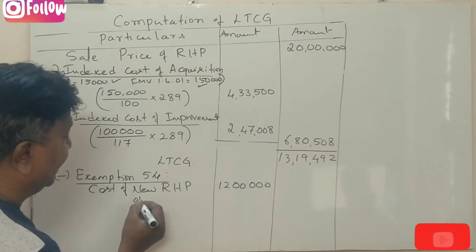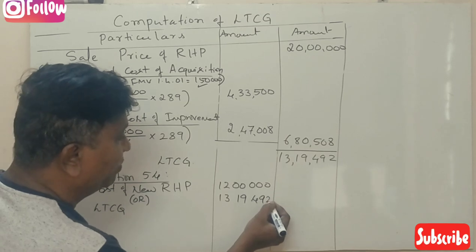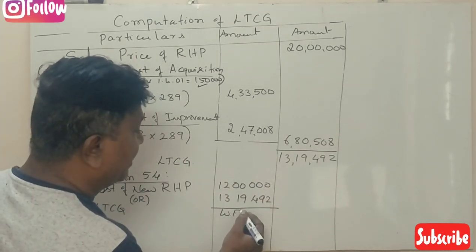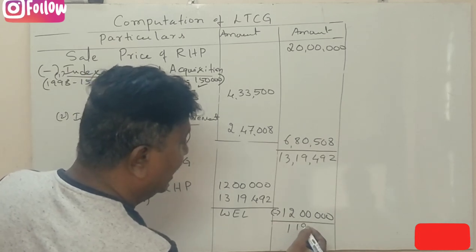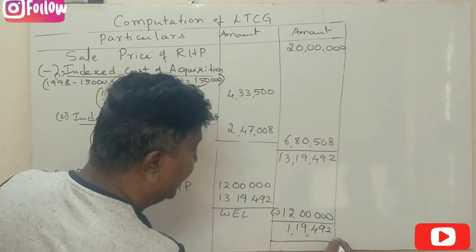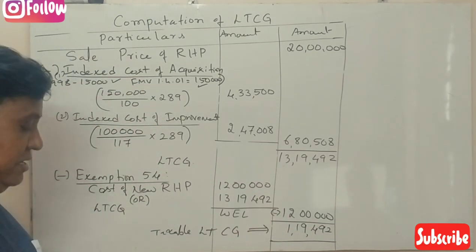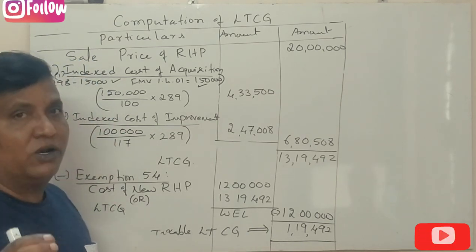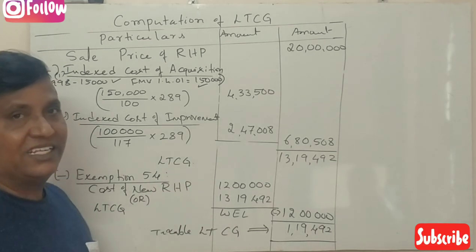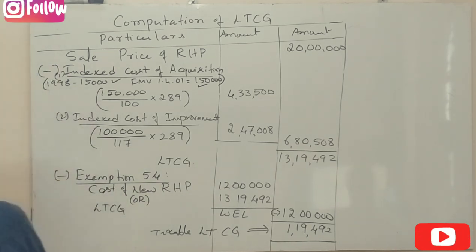The long-term capital gain is Rs. 13,19,492. Since the new house cost Rs. 12 lakhs which is less than the capital gain, the Section 54 exemption is Rs. 12 lakhs. Therefore, the taxable long-term capital gain is Rs. 13,19,492 minus Rs. 12,00,000 equals Rs. 1,19,492. This was a 6-mark question from the 2018 exam paper.